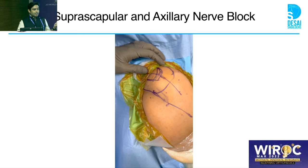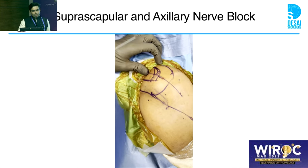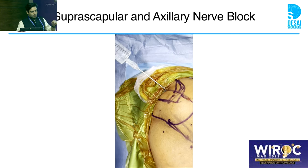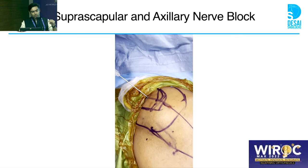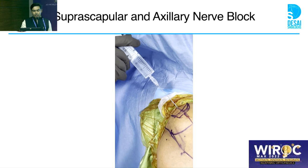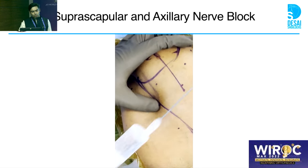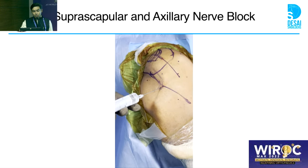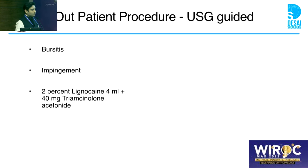Suprascapular and axillary nerve blocks are an option when anesthetist turnover time is a concern. Mark out the acromion and inner border of the clavicle — through the Neviaser portal you directly hit the suprascapular fossa where the suprascapular nerve is. Inject 0.25% sensorcaine, about 10 cc, to block the suprascapular nerve. About three finger-breadths down posteriorly to the insertion of the deltoid is where you inject for an axillary nerve block. These are simple procedures to help patients wake up pain-free. For bursitis and impingement, I prefer USG-guided injections using 2% lignocaine and 40 mg triamcinolone.